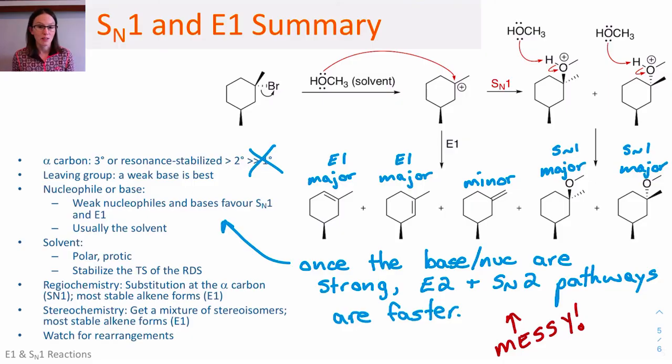And for the purpose of this course, we'll stop at the point where we get a mixture of products that form. And between the alkenes, for example, you should be able to identify which ones are major and minor. But after that, just know that it's a mixture.